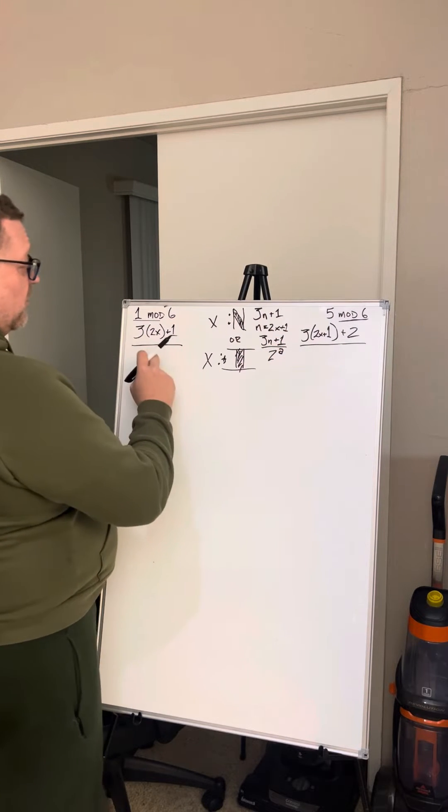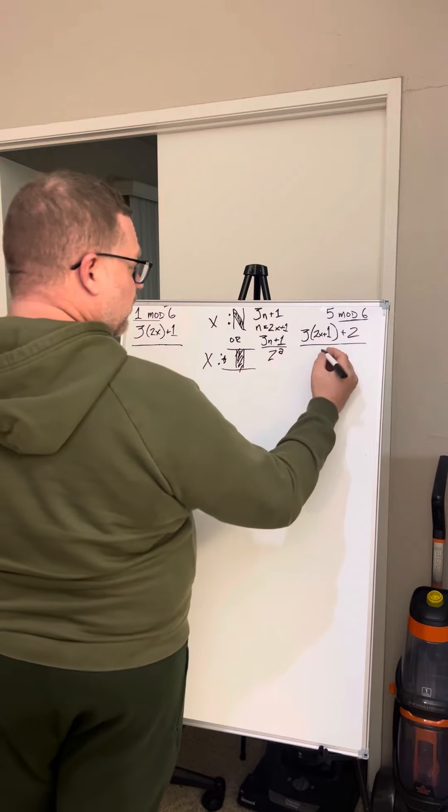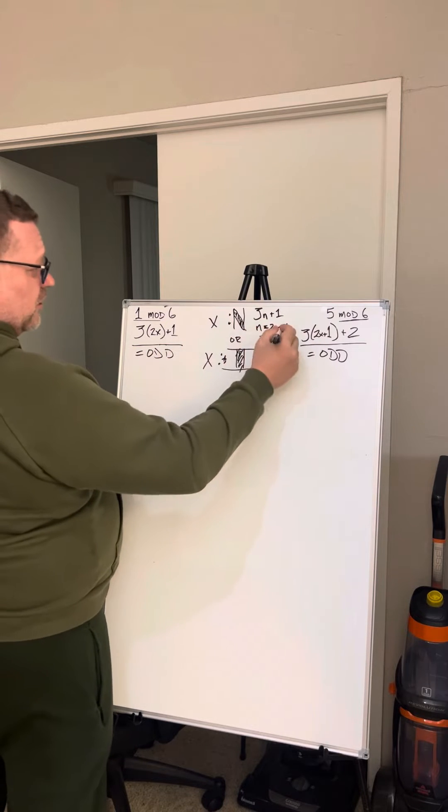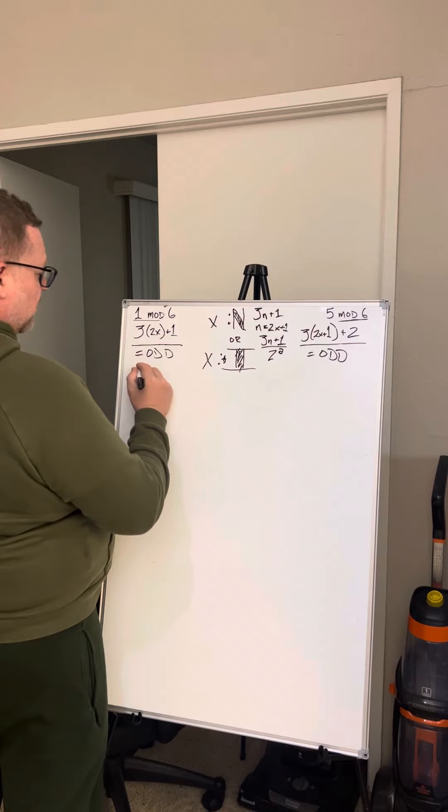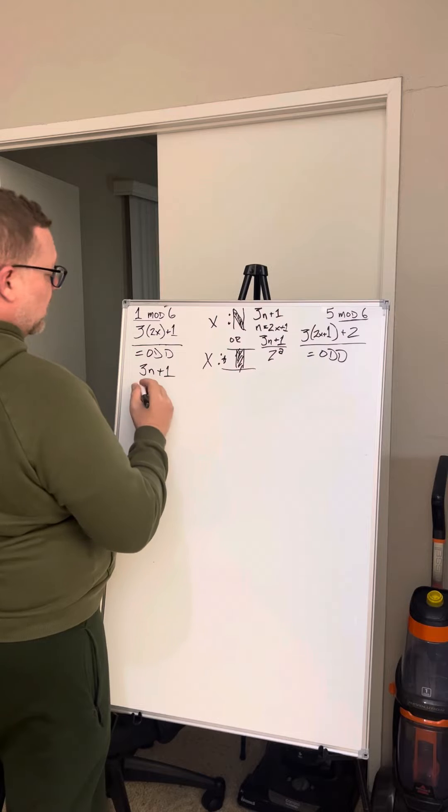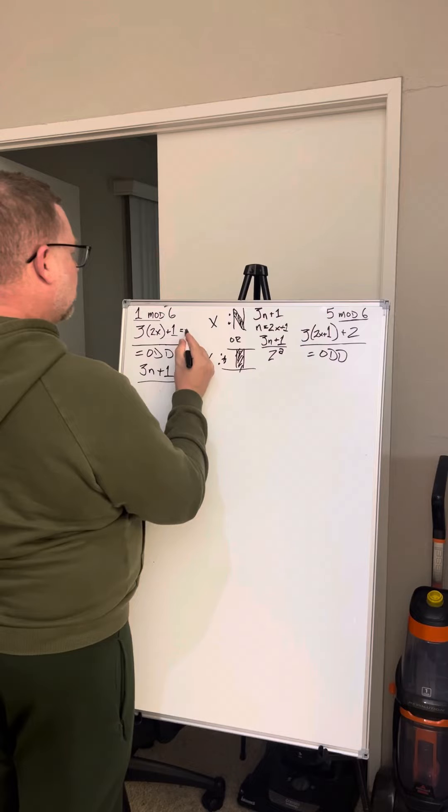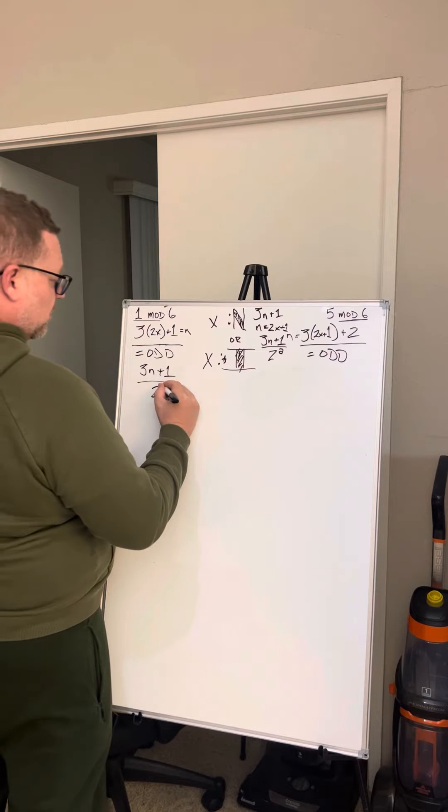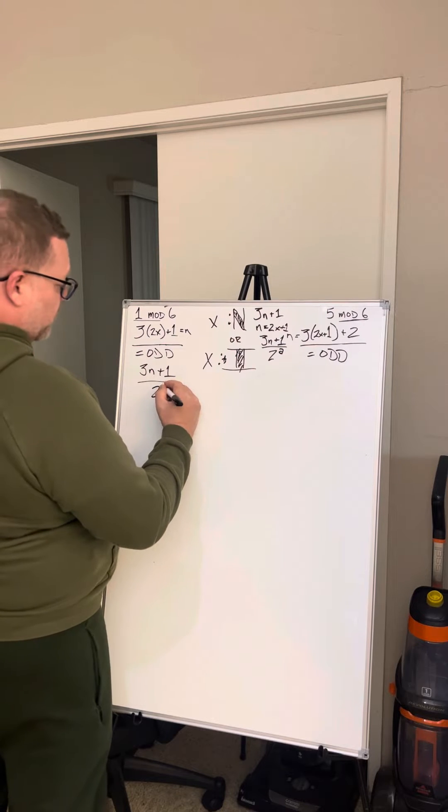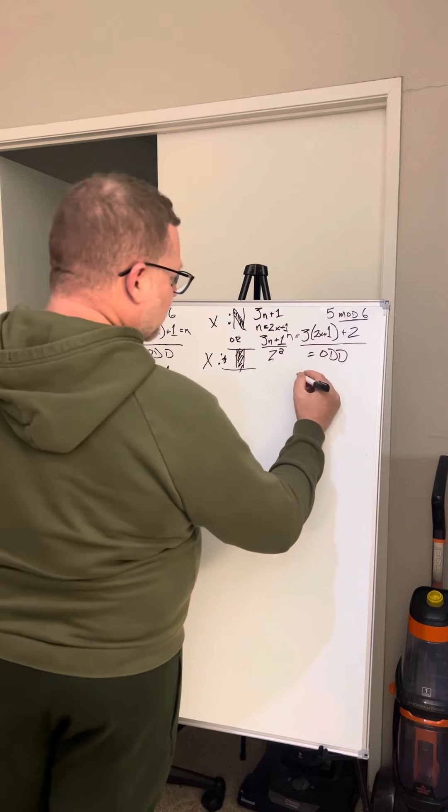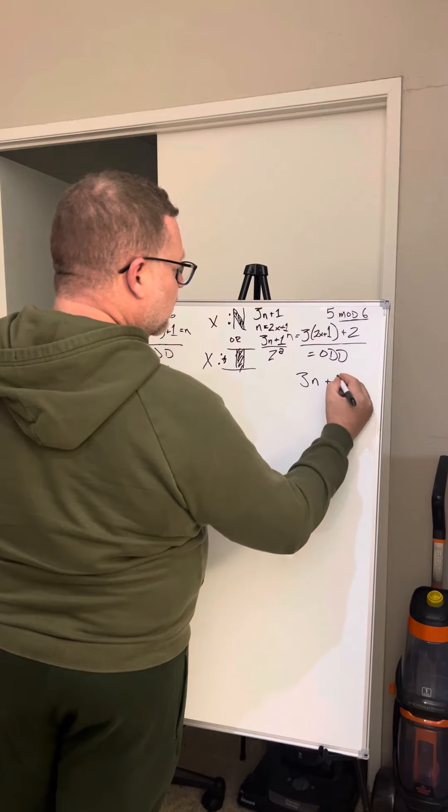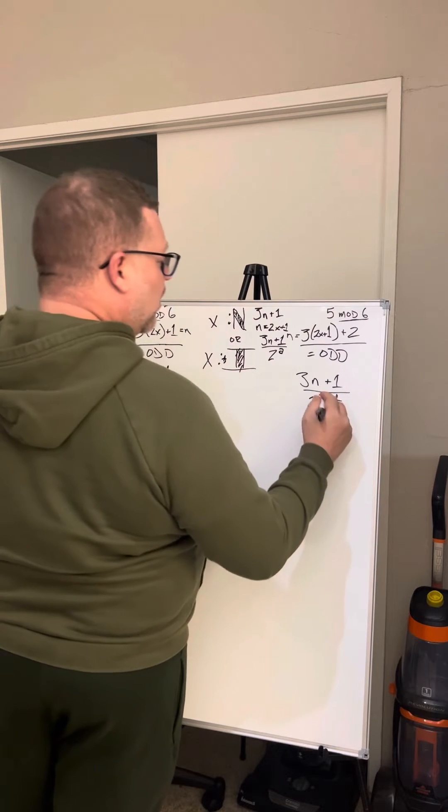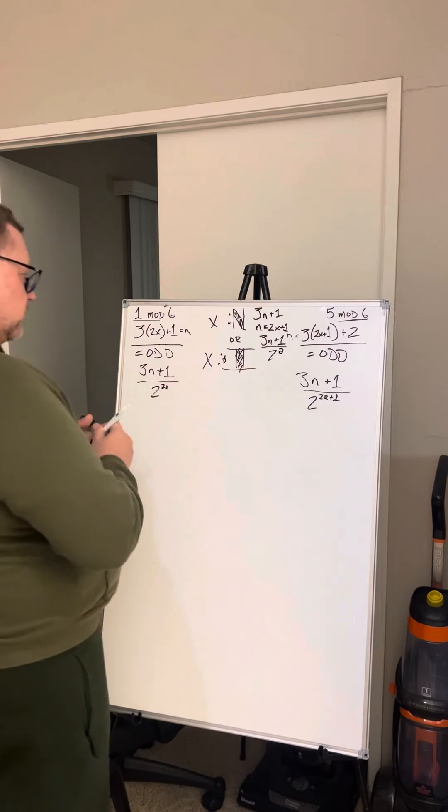We know this is an odd number, so it can be n. So this whole thing is n. Now we need to make it 3n plus 1. Now we're going to divide by 2, and this is true of the other one. But this is only the even divisions by 2. So this is 2 to the 2a, times 2a plus 1. This is odd divisions by 2, so a goes from 0 to infinity.